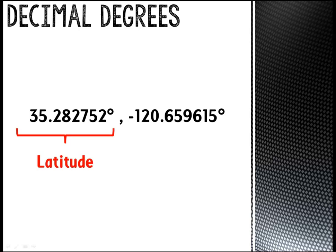The latitude is sometimes followed by an N or an S, but sometimes the direction is indicated by a positive or a negative sign. Positive 35, in this case, means 35 degrees north of the equator. The second coordinate is usually the longitude. This may be followed by a W or an E, or the direction is indicated by positive or negative signs. Negative 120 means 120 degrees west of the prime meridian.